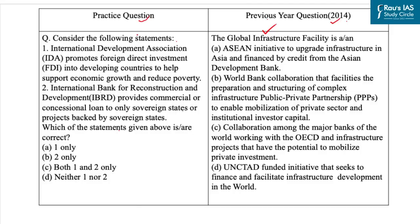Now let's come to the practice question. You have to find the correct statement. Before answering, let me briefly explain the World Bank. It is one of the five institutions created at Bretton Woods in 1944, of which India was a founding member, and it comprises four institutions: IBRD (International Bank for Reconstruction and Development), IDA (International Development Association), IFC (International Finance Corporation), and Multilateral Investment Guarantee Agency (MIGA).